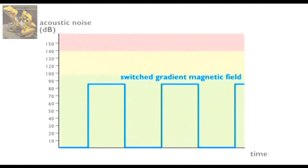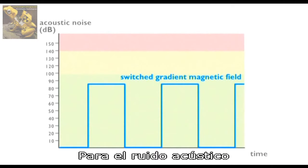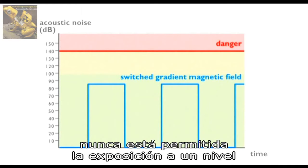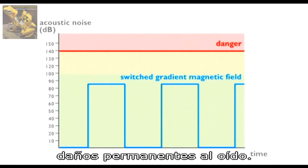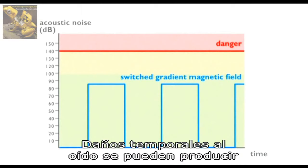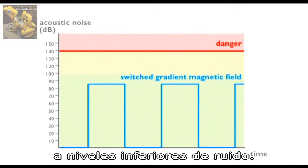For acoustic noise, exposure to a level higher than 140 dB peak noise is never allowed, to prevent permanent damage to hearing. Temporary hearing damage can occur at lower noise levels.